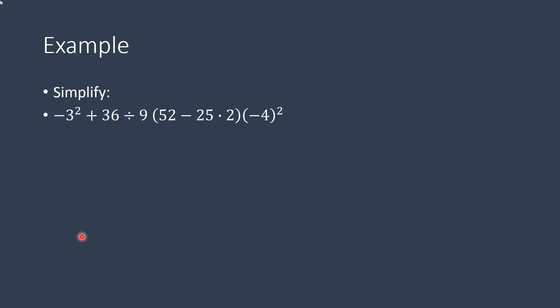So you're told to simplify this: negative 3 squared plus 36 divided by 9, parentheses 52 minus 25 times 2, closed parentheses, negative 4 parentheses squared.